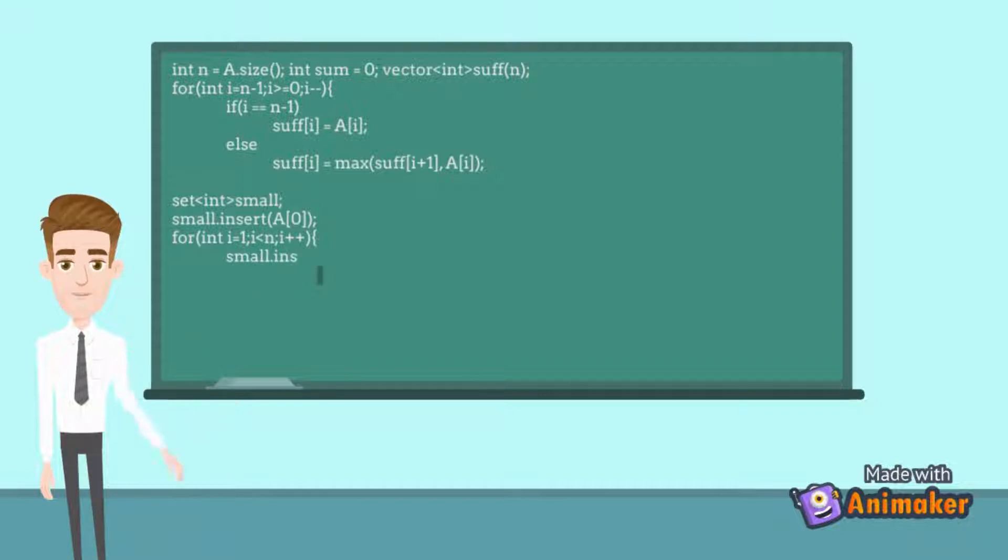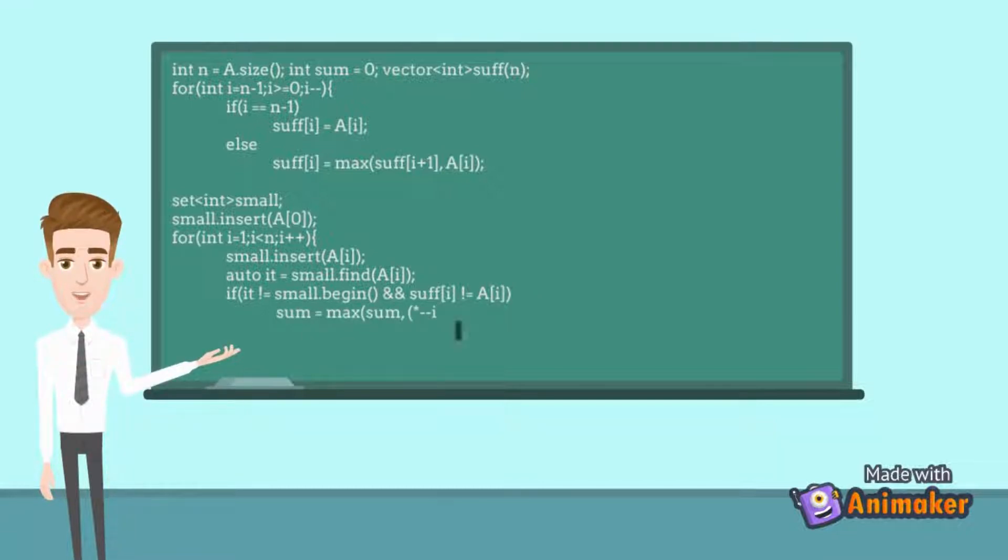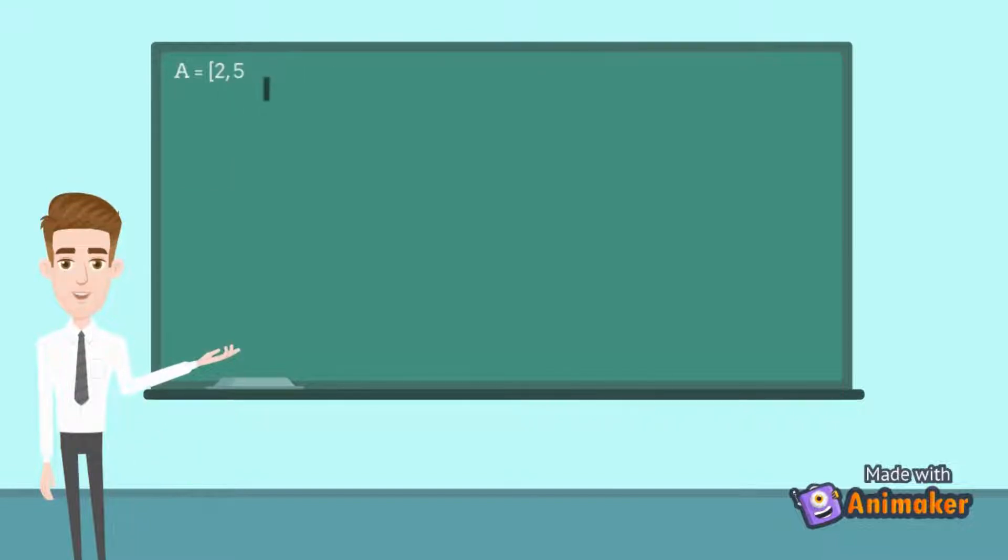Then we will create a set that will be used to find the largest smaller number from left. We will start a for loop from index 1, and for every index, we will insert the current element into the set. The largest smaller number will be the number just before the current number in the set, and the maximum number from right will be given from the suffix array. Now we add these numbers and take maximum at every step. We will get the final answer when the for loop ends.